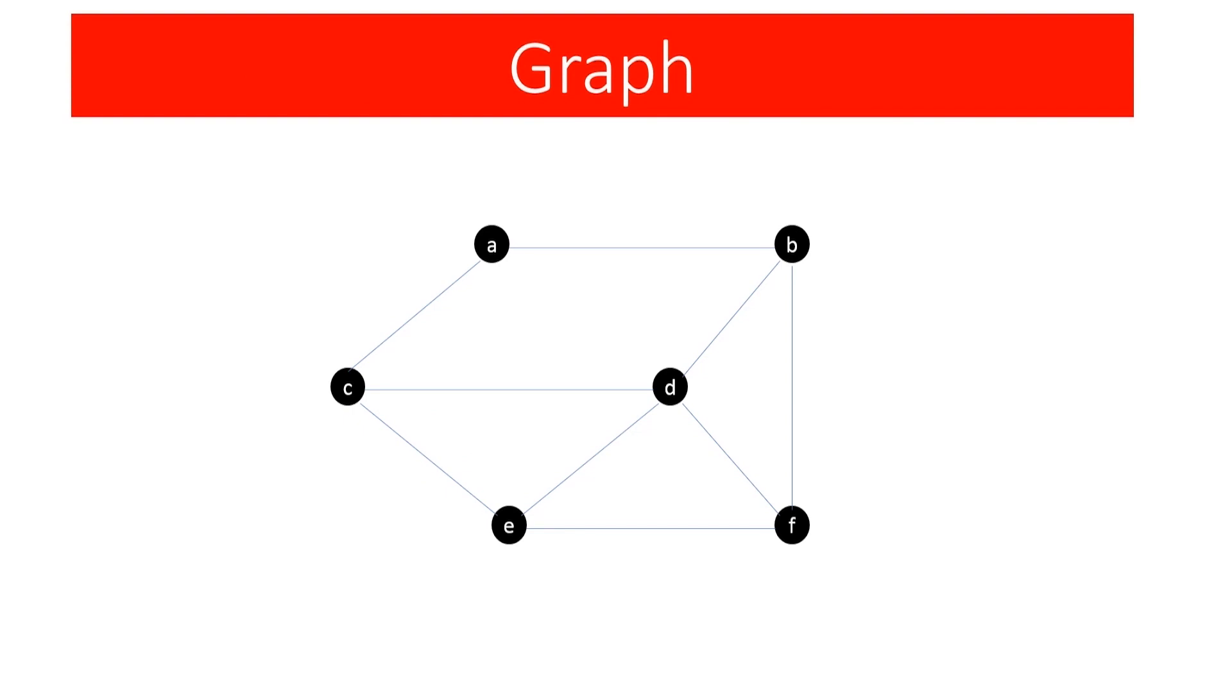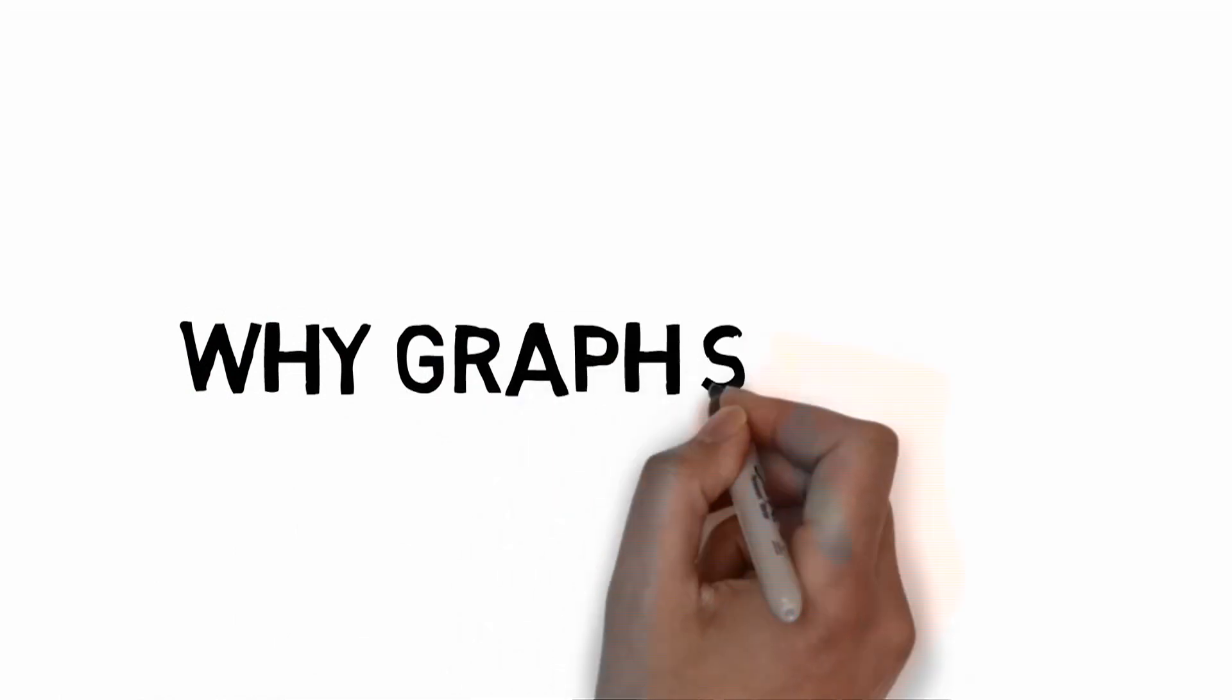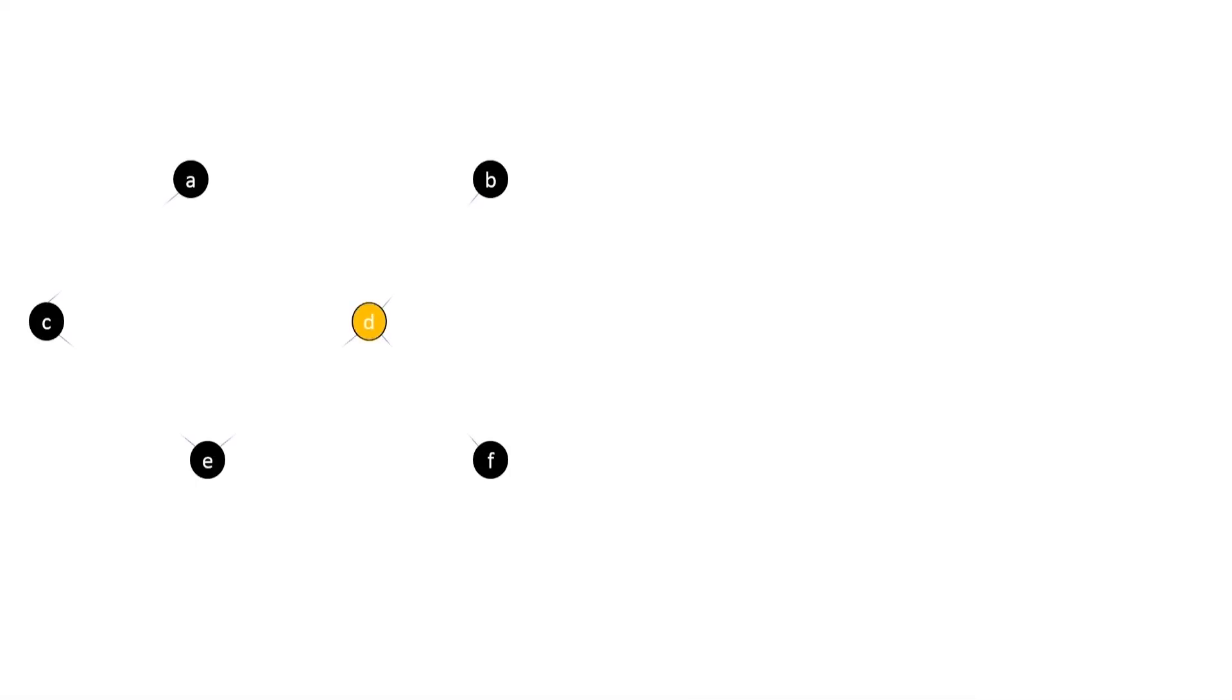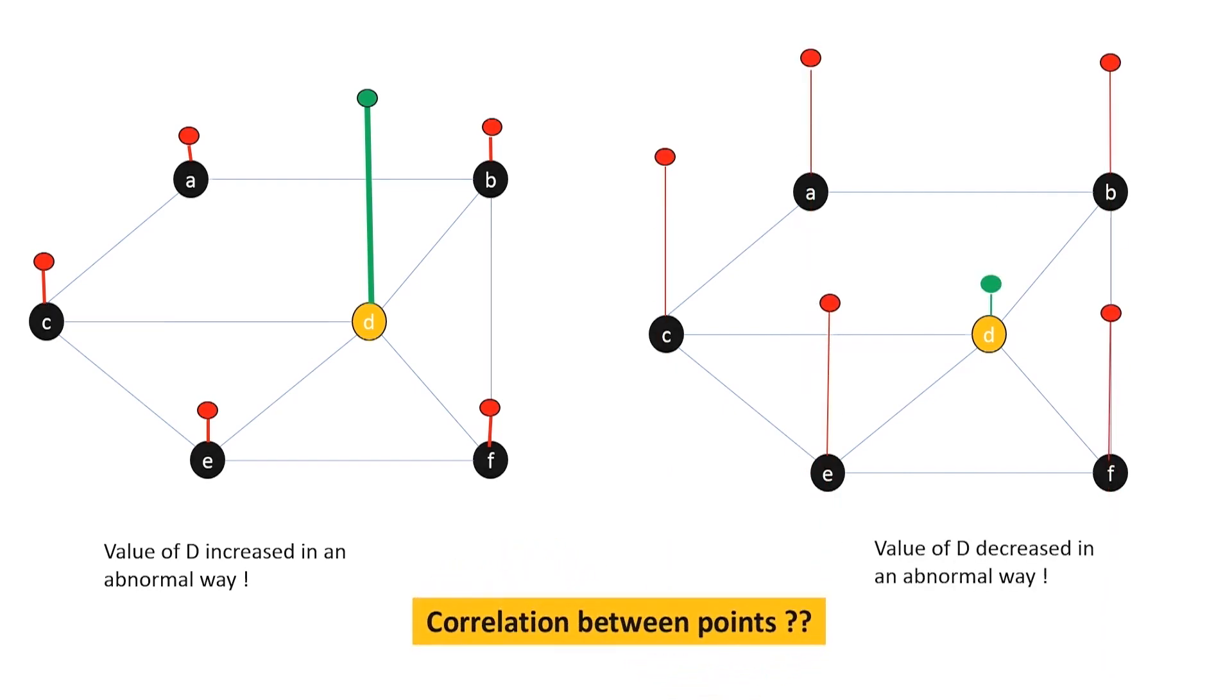And now if we combine both the graph info and signal info we can get a graph signal. This is the graph signal, and we can represent the correlation between all sensing points. For example consider this point D in the diagram. Its value depends on all the values around that point. So in case if value of one point increases or decreases in an abnormal way we can correctly evaluate that by using the values of the points around.